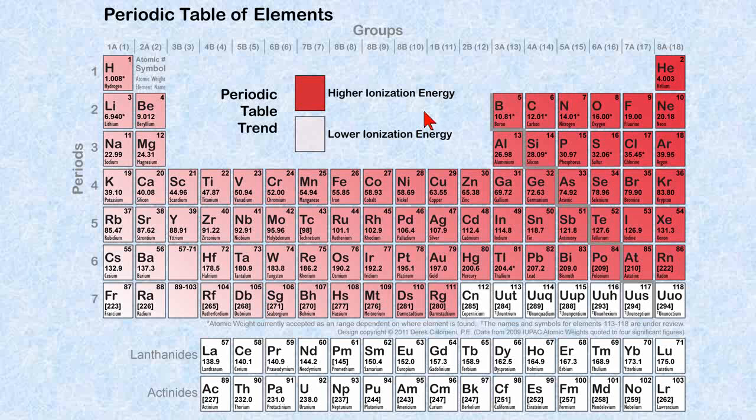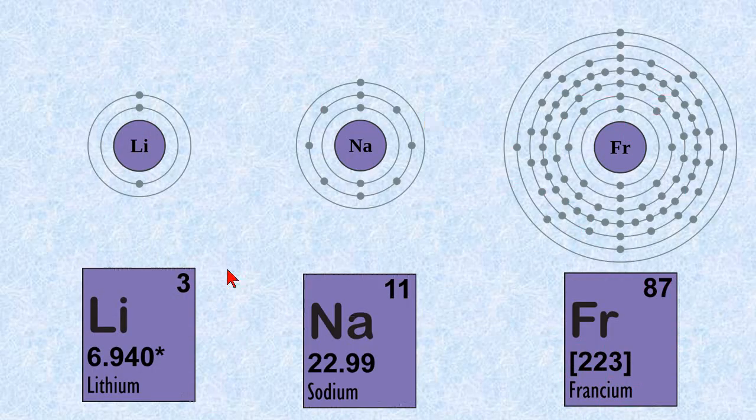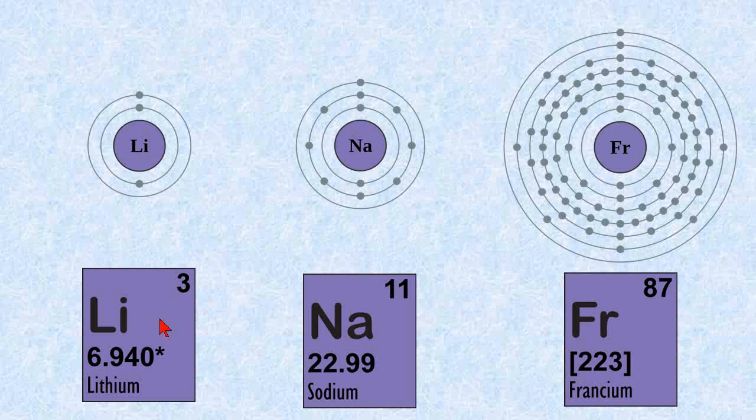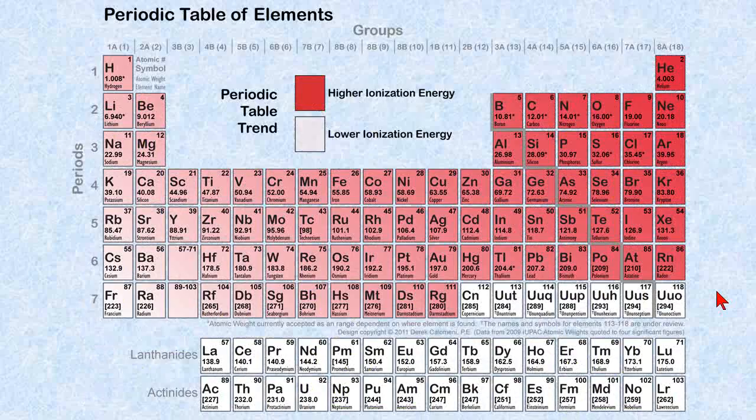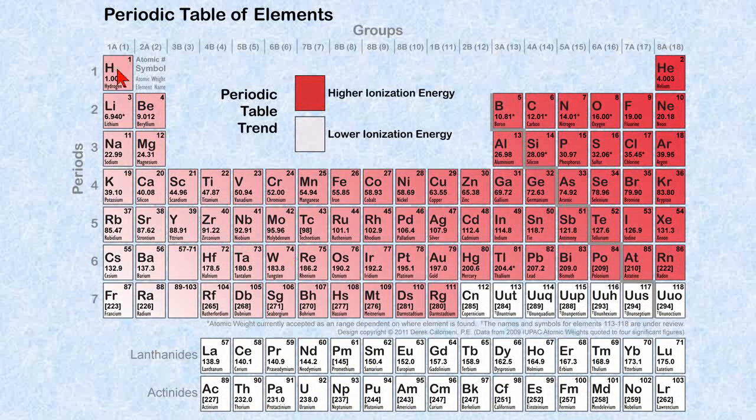So let's look at the trends for the groups and the periods. As we look at the periods here, as we go down group one, which is the alkali metals, we see that lithium here has a little bit higher ionization energy than francium because the electrons in the outer shell tend to be closer to the nucleus. These electrons are further away, and they just want to drift off. And that's what we do see here is hydrogen has the higher ionization energy in lithium than francium.